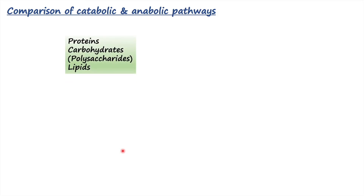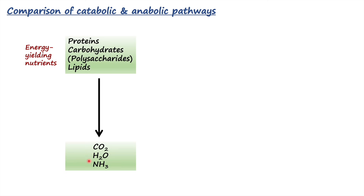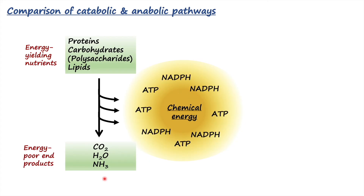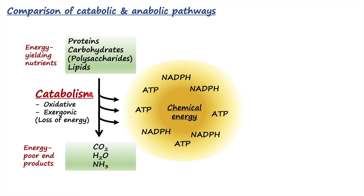Let's now compare these two pathways. Complex molecules — proteins, carbohydrates, and lipids — are energy-rich fuel molecules, also called energy-yielding nutrients. They are first broken down into building blocks such as amino acids, monosaccharides, glycerol, and fatty acids. These building blocks are then oxidized into carbon dioxide, water, and ammonia, which are energy-poor end products. This is catabolism — an oxidative, exergonic pathway with a net loss of energy.